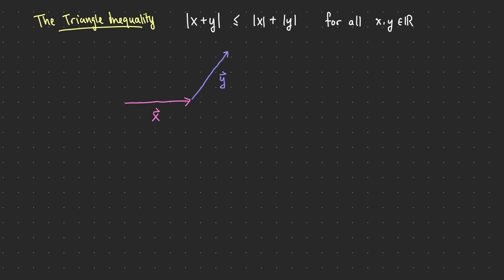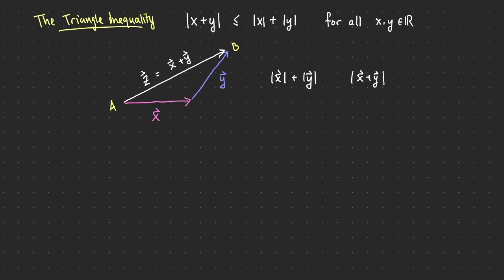Let's say I have a vector x and then another vector y attached to the tip of x. If I start at the tail of x and go to the tip of y, that's the same as adding x and y. Going along x then along y is one path from a to b, while going directly is going along x plus y. Clearly the shortest path is the straight line, so x plus y has shorter length than the sum of the lengths of x and y. This is the visual interpretation of the triangle inequality.